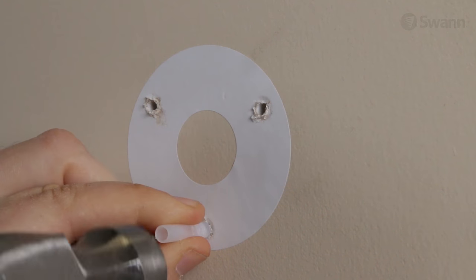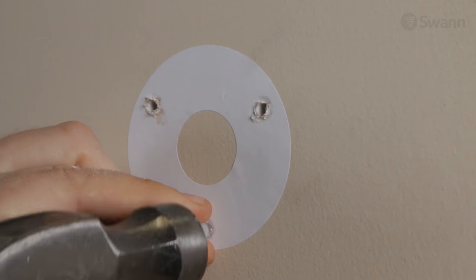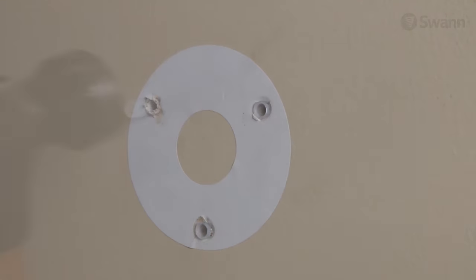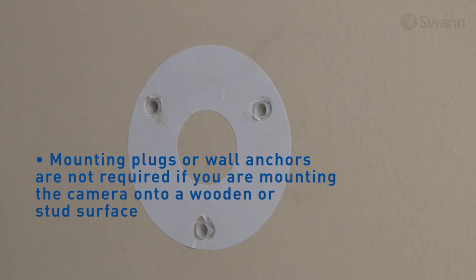Once the holes are drilled, gently tap the mounting plugs or wall anchors into the holes with a hammer until they are flush with the surface. Mounting plugs or wall anchors are not required if you are mounting the camera to a wooden or stud surface.